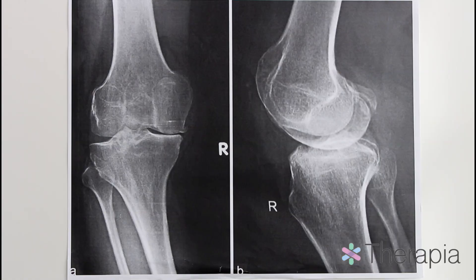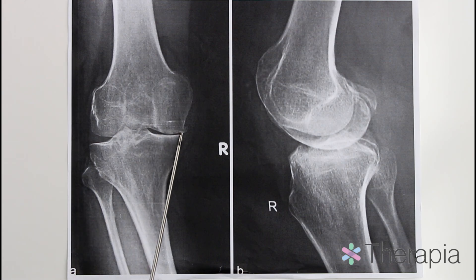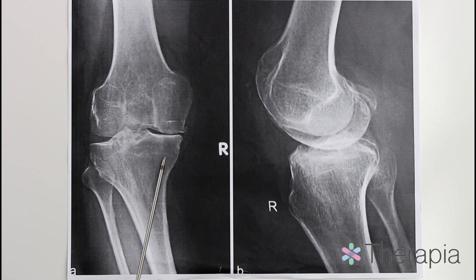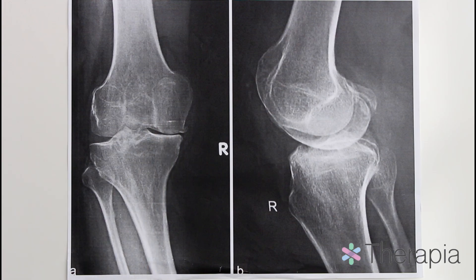In this x-ray of the right knee, an AP and a lateral radiograph have been taken. This patient has end-stage arthritis of the knee, and this is characterized by decreased joint space or almost bone-on-bone articulation between the femur and the tibia, as well as the presence of an osteophyte or bony overgrowth along the medial femoral condyle.